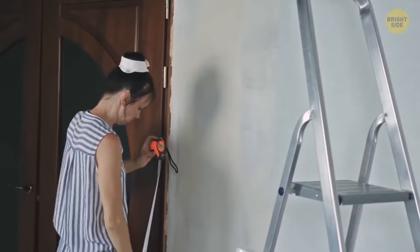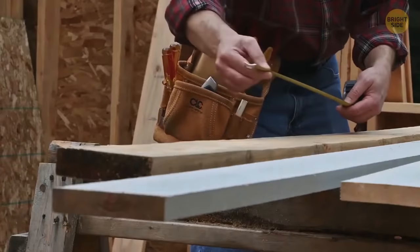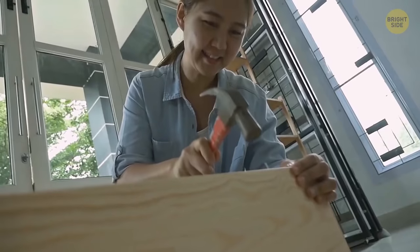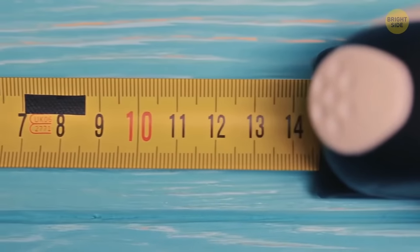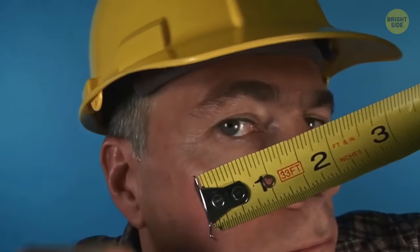If you don't have anyone to hold the other end of your tape measure when you try to measure something, tap a nail on it. Now, simply hook your tape on it using the tiny hole all tape measures have.